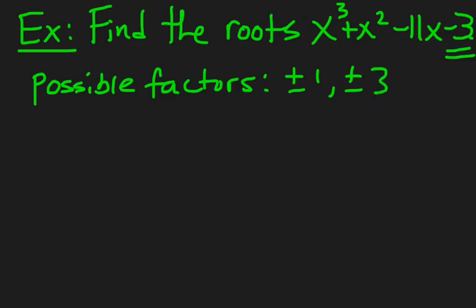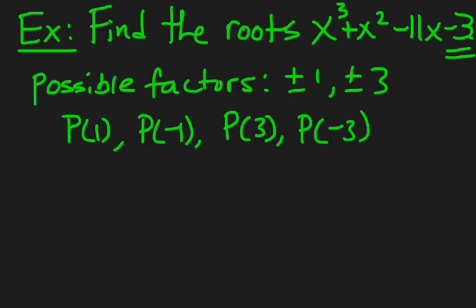So what we need to do is now evaluate this cubic with those possible factors. So we need to find what P of 1 is, P of negative 1, P of 3, and P of negative 3. So you can see how this could easily get cumbersome. If you had something like 24, you would have a lot of possible factors. But remember, all we need to do is find 1. So once we get 1, we are set. So I'm going to cheat a little bit. And what I say to my students, if you have some intuition into what you think this factor is, use that. Because remember, we only need 1. That's all we need.